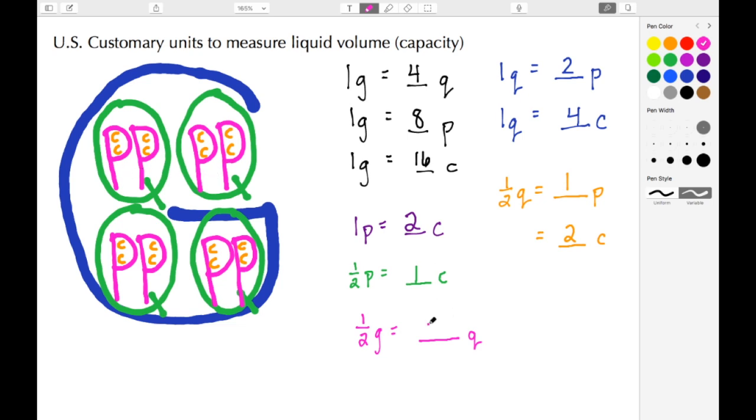If I wanted to convert that half a gallon into pints, well if I take half of it, that would be these two quarts, and then these quarts I see I have a total of four pints.